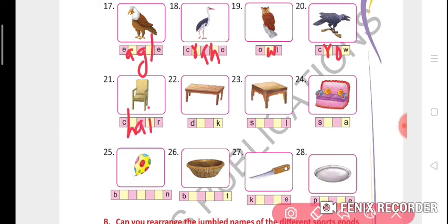Twenty-second, desk: D-E-S-K. Twenty-third, stool: S-T-O-O-L. Twenty-fourth, sofa: S-O-F-A. Twenty-fifth, balloon: B-A-L-L-O-O-N. Twenty-sixth, basket: B-A-S-K-E-T. Twenty-seventh, knife: K-N-I-F-E.